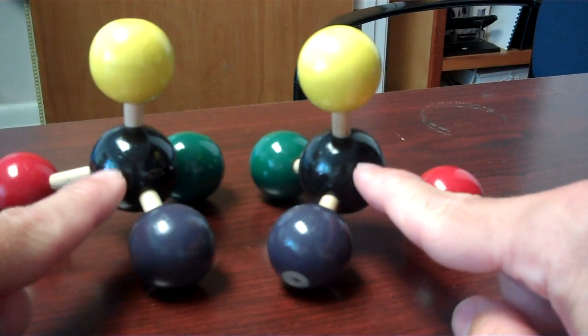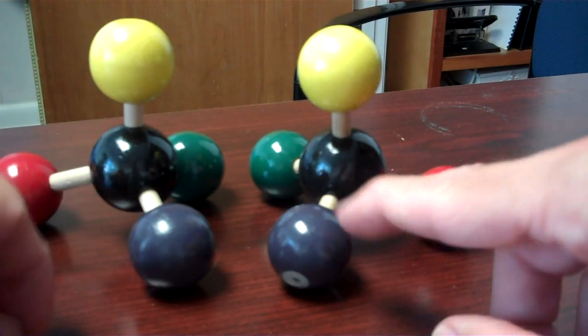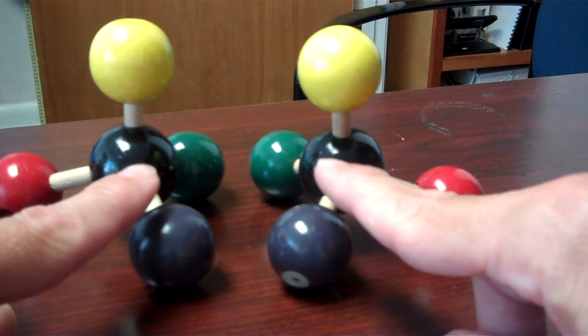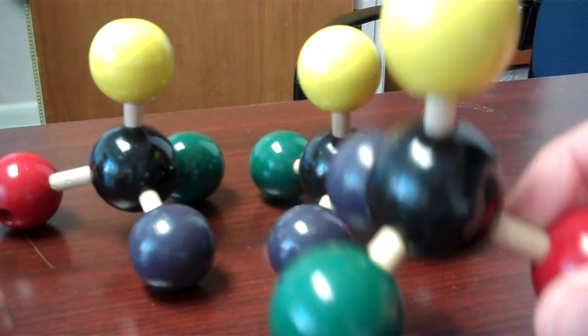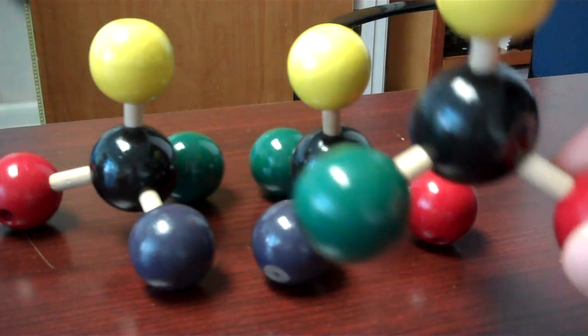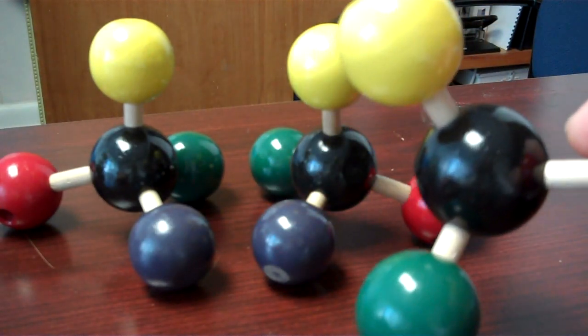With only one carbon that is chiral, one carbon that has four different substituents, that means there's only two of these isomers that are possible. If I build a third molecule like this one, it's going to necessarily have to be a duplicate of one of these two.